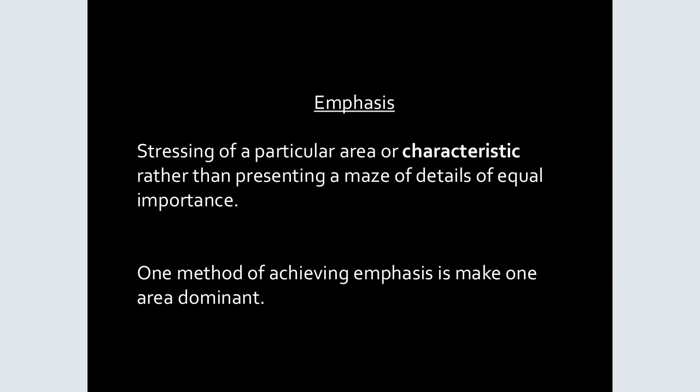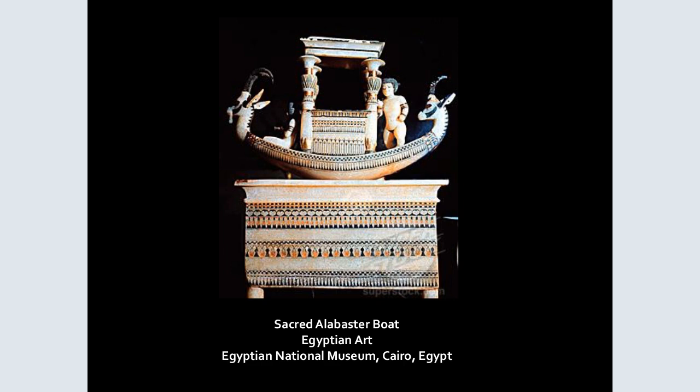The next area is emphasis and economy. Emphasis is stressing of a particular area or characteristic rather than presenting a maze of identical details of equal importance. One method of achieving emphasis is making one area dominant. If we take a look at this piece, the top part is more important than the bottom half — the bottom almost acts as a stand for the little boat with figures on top, and the eyes are drawn to the area being emphasized.